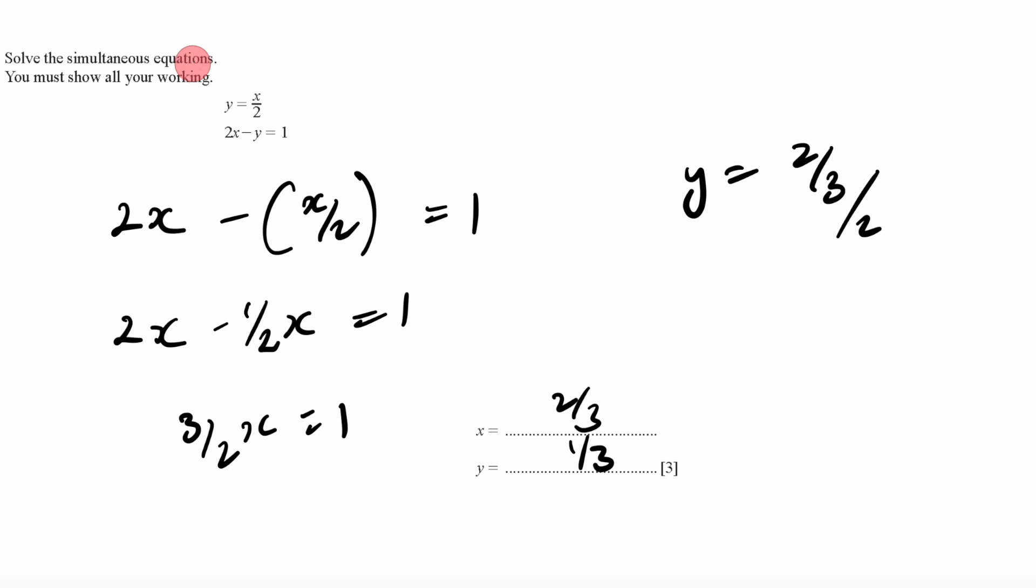For simultaneous equations like this, we use the substitution method. Since we know y equals x over 2, I will substitute in the second equation, making it 2x minus y, so x over 2 equals 1. 2x minus half x equals 1. By opening it up, I can find the value of x, which is 2 over 3. To find the value of y, you put 2 over 3 into the first equation by doing 2 over 3 divided by 2, giving us a value of 1 over 3.